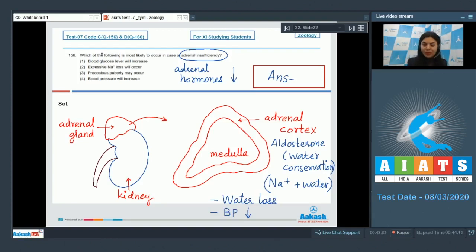Let's go over the options. Option one, blood glucose level will increase - that is incorrect. Glucocorticoids bring about an increase in blood glucose level, and in their deficiency or insufficiency, blood glucose will decrease rather. Option two, excessive sodium loss will occur - this is true. Sodium would be lost resulting in water loss, so this is a correct statement.